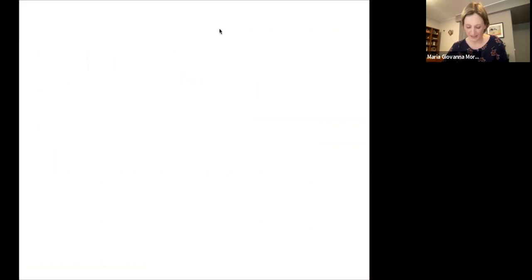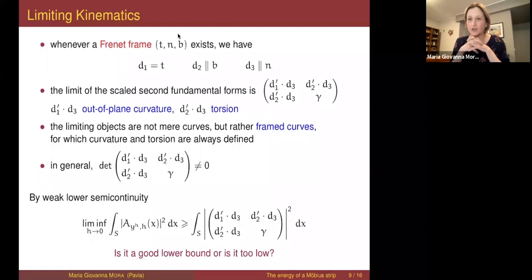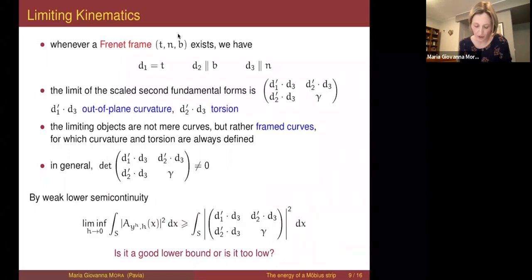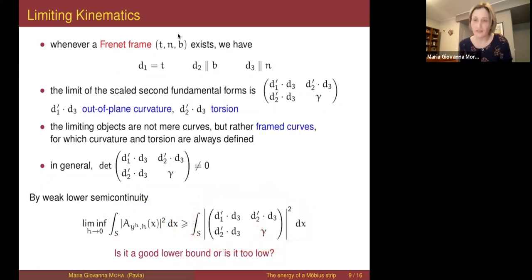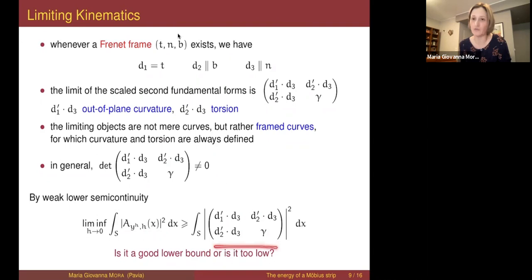The question is whether this lower bound is optimal — can I find a sequence of scaled isometries on which I attain it? To attain it means the limit of the L² norms equals this quantity, but we also have weak convergence, so we need strong convergence of those matrices to this matrix. However, these matrices have zero determinant, and under strong convergence the strong limit must also have zero determinant. But that's not the case in general — so this bound cannot be attained; it's too low.